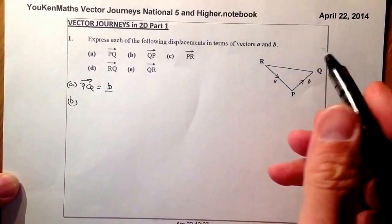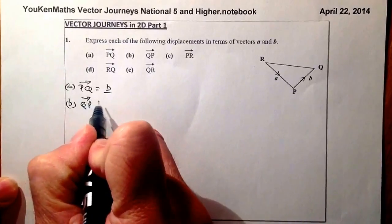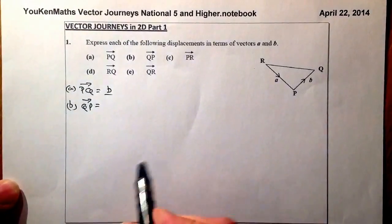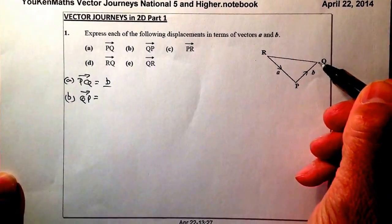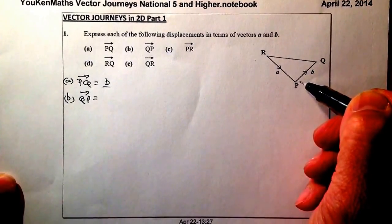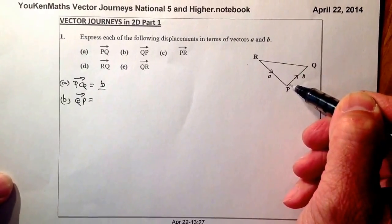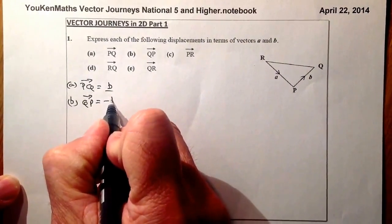For part B what we've got is we have to work out the vector QP in terms of A and B. QP is just from Q to P which is just the reverse of PQ. So it would be negative in the opposite direction of vector B. So it's going to be negative B.